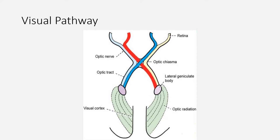At the end of each optic tract, the retinal nerve fibers connect with other visual pathway nerves in a structure called the lateral geniculate nucleus located in the midbrain. Some processing of the electrical signals occurs in the lateral geniculate nucleus before a series of radiating nerve fibers, the optic radiation, convey the information to the visual cortex in the posterior portion of the occipital lobe.